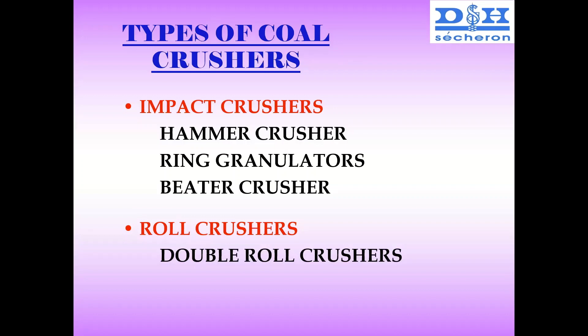In a hammer crusher, the name is self-explanatory — there are hammers fitted on a rotor. The rotor rotates at high speed. Coal is inserted inside, and the hammers strike against the coal, causing the coal to start getting ground.